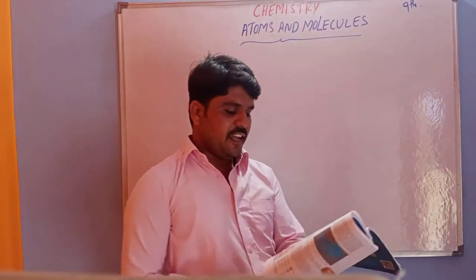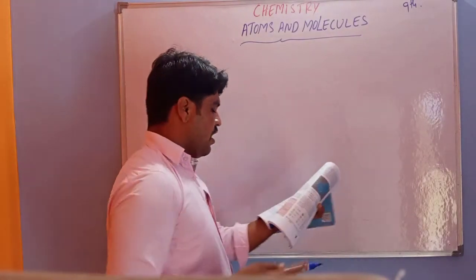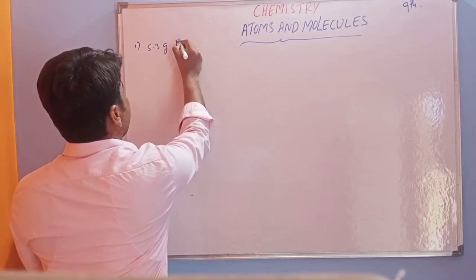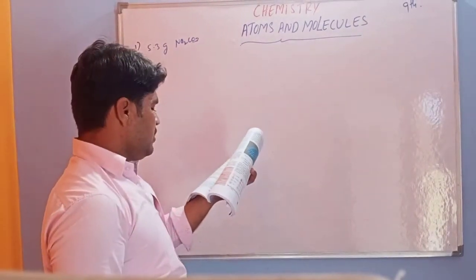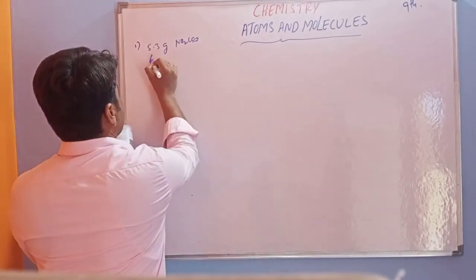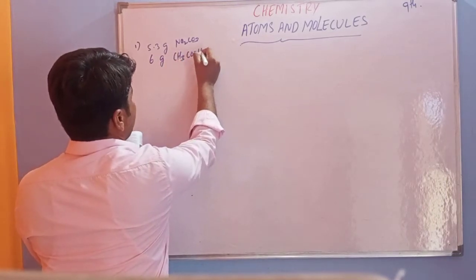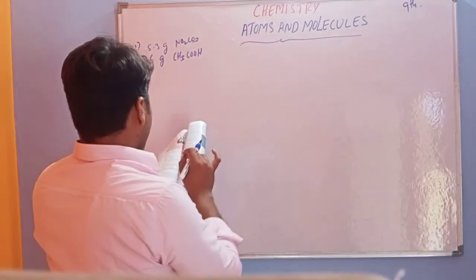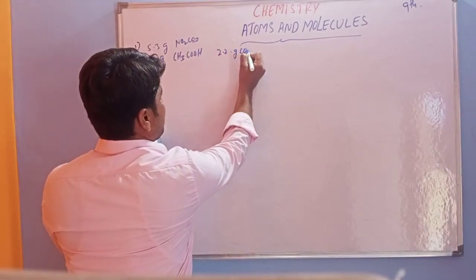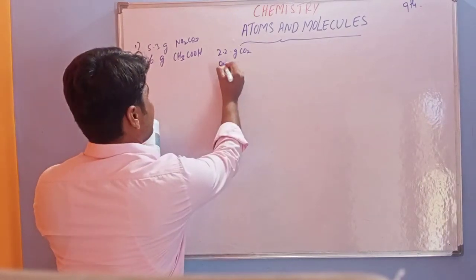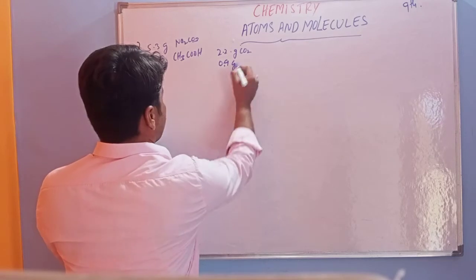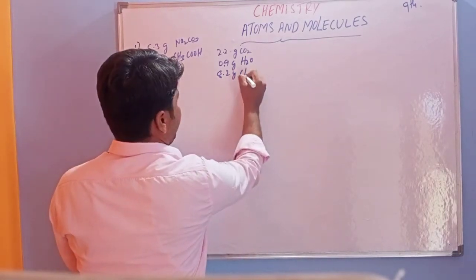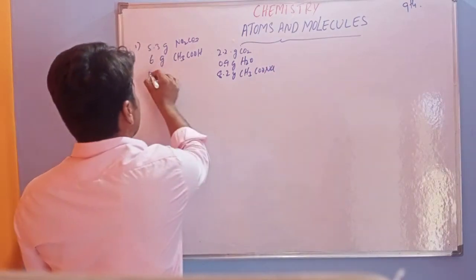The first question: in a reaction, 5.3 grams of sodium carbonate (Na₂CO₃) reacts with 6 grams of ethanoic acid (CH₃COOH — that is the IUPAC name of ethanoic acid). The products are 2.2 grams of carbon dioxide (CO₂), 0.9 grams of water, and 8.2 grams of sodium ethanoate (CH₃COONa). These are the reactants and these are the products.